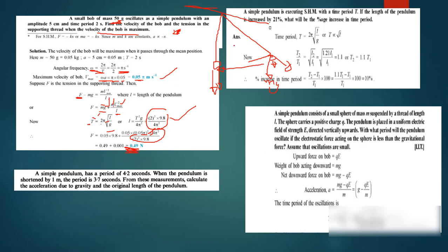We have another example: a simple pendulum is executing simple harmonic motion with time period T. If the length of the pendulum is increased by 21%, find the percentage increase in the time period. We know the time period is directly proportional to the square root of the length, so we compare two periods.